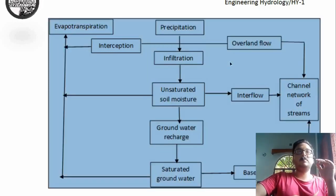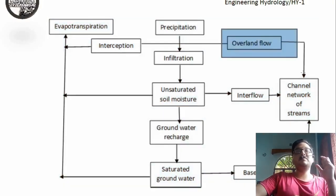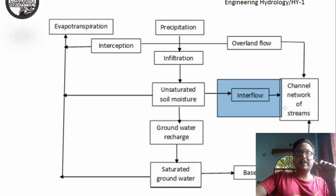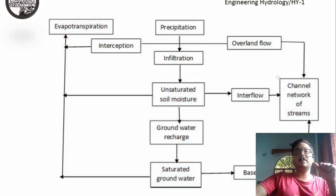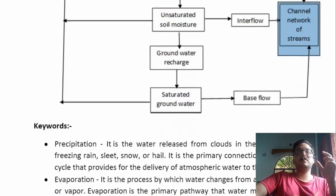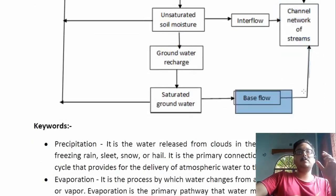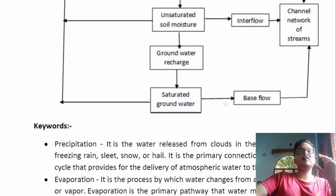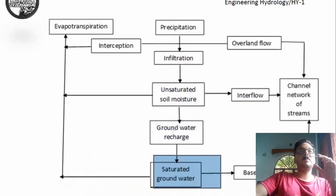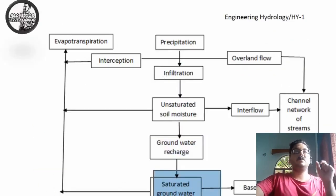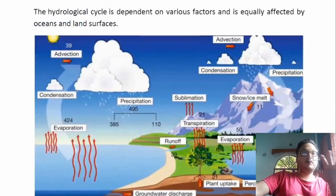That intercepted water does not contribute to groundwater recharge or surface runoff. Next is overland flow, which is basically surface runoff. From the unsaturated soil moisture, we have interflow that occurs in the soil base and forms the channel or network of streams. This contributes to the formation of streams, channels, and networks. It then goes toward the base flow and again to saturate the groundwater, which all goes toward evapotranspiration.